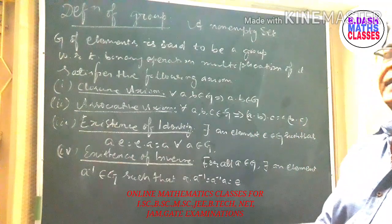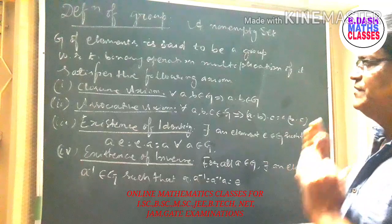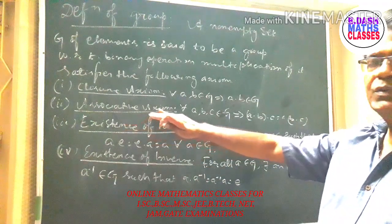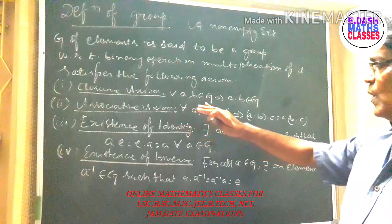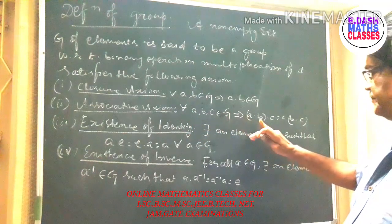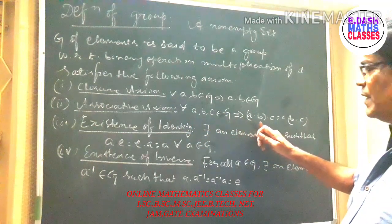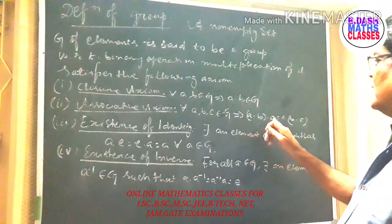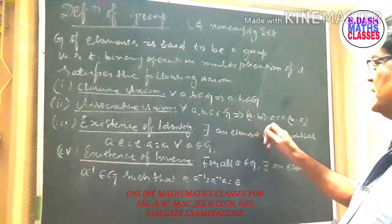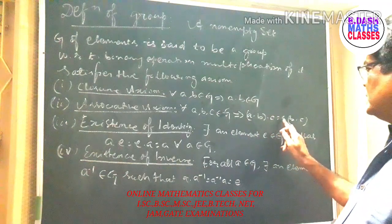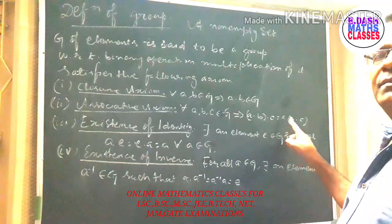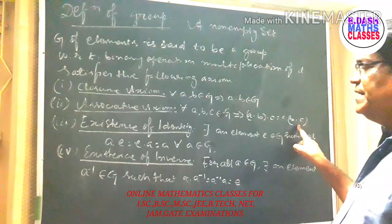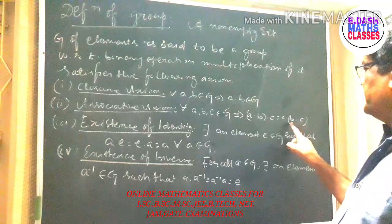That means if we choose any two elements from G, their multiplication must be inside G. Then let us proceed to the associative axiom: for all a, b, c belonging to G, a multiplied with b, then the result multiplied with c.